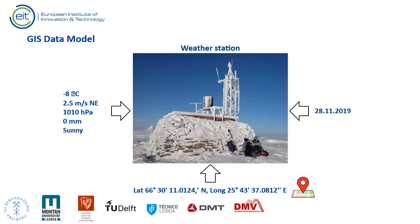It is estimated that over 90% of all data being collected can be geographically referenced — data such as real objects, but also processes such as migration and events such as earthquakes. A meteorological or weather station collecting observations on temperature, relative humidity, precipitation, wind speed and direction, visibility, and atmospheric pressure is an example of data that can be precisely located in space and used for geospatial modeling such as interpolation.